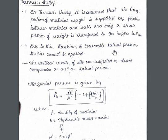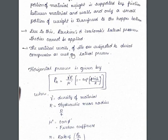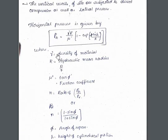Due to this assumption, Rankine's or Coulomb's lateral pressure theory cannot be directly applied. The vertical walls of a silo are subjected to direct compression as well as lateral pressure. These are the two forces acting on the vertical walls: horizontal pressure and direct compression.